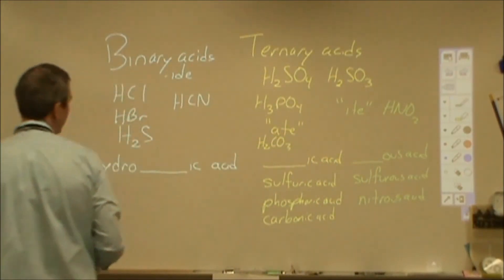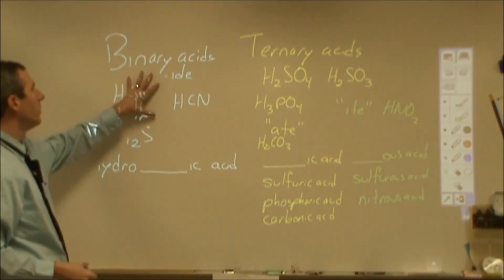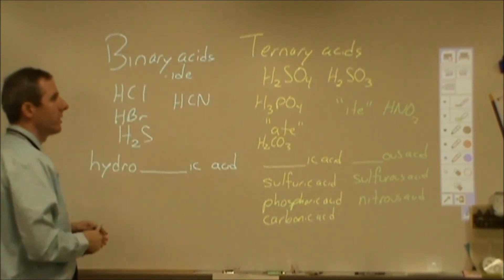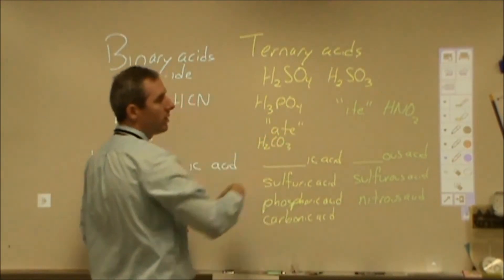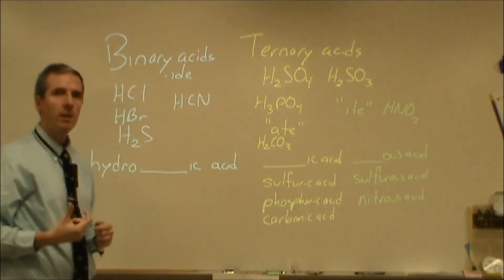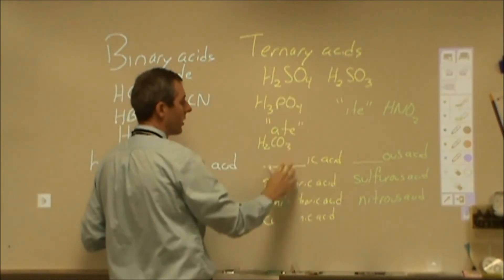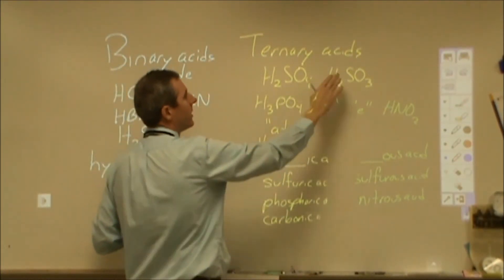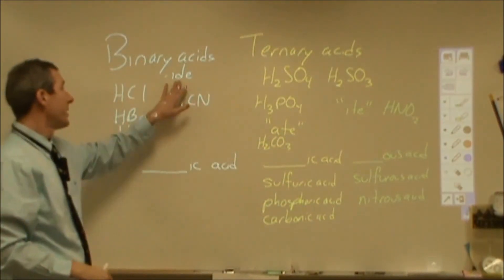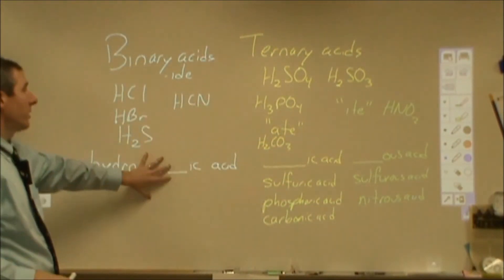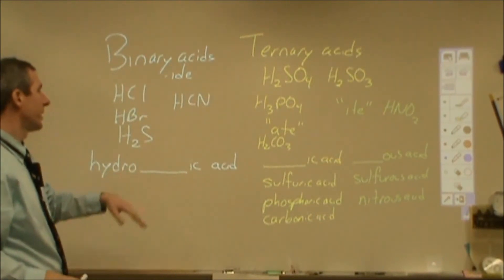The first thing you need to do when you see that you have an acid is determine: do I have a binary acid or do I have a ternary acid? If you have a ternary, you need to look at the ending of the polyatomic ion. If it ends in '-ATE,' then you're going to use '-ic acid.' If it ends in '-ITE,' you're going to use '-ous acid.' And if it ends in '-IDE,' you're actually going to use the binary acid naming process — so hydrocyanic acid.